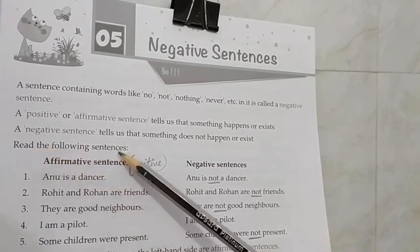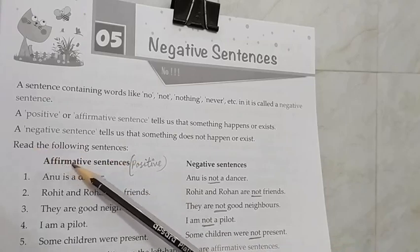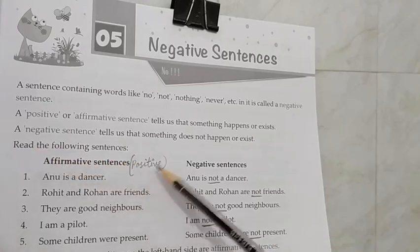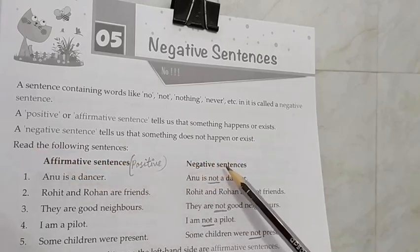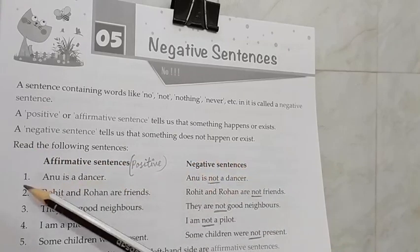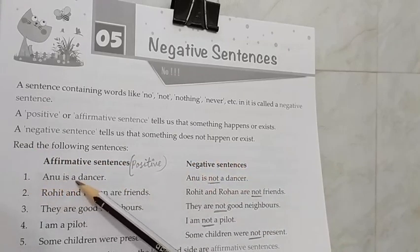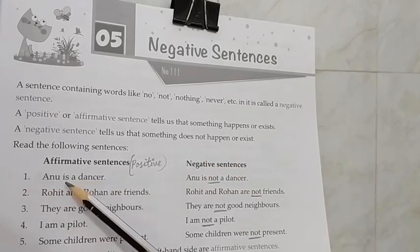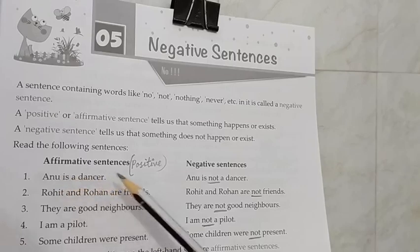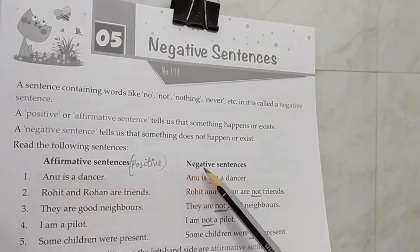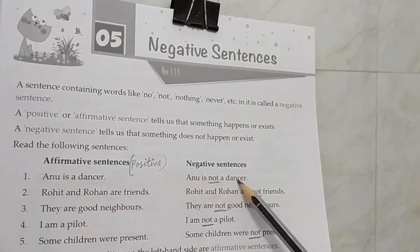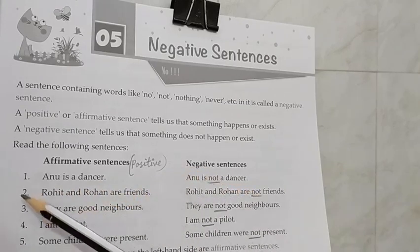Read the following sentences. Affirmative sentence or positive sentence. Negative sentence. One: Anu is a dancer. It is a fact, it is a truth. Anu is a dancer. When you change into a negative sentence: Anu is not a dancer. 'Not' is added.